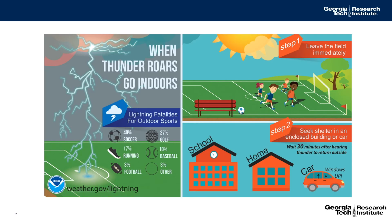To stay safe from lightning in a thunderstorm, there's a very simple thing to remember: when thunder roars, go indoors. If you can hear the thunder, that means the thunderstorm is close enough that lightning might strike nearby. The first thing you should do is leave the playing field or outside immediately. You want to go inside to an enclosed building with doors and windows like your school or your house. Or if there's not a school or house nearby, you could go into a car with a hard roof and roll the windows up.